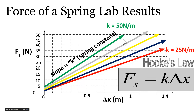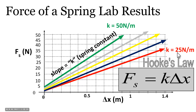For our green spring, our slope or spring constant was 50 newtons per meter — it required about 50 newtons of force to stretch it one meter. For our red spring, we said it was a weaker spring because it only required about 25 newtons of force to stretch it a meter.